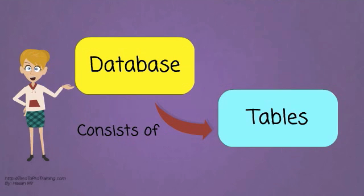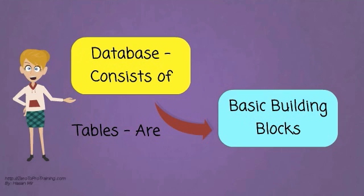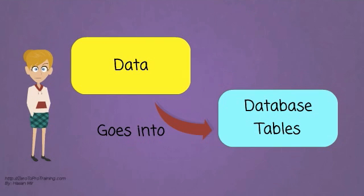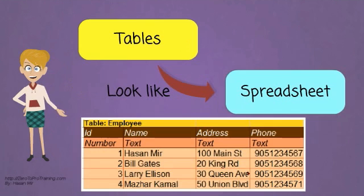A database is constructed of multiple tables. A table is the most fundamental building block of a database. A database without a table would be of little or no use. There would be no data in the database without a table. Not only that, data would have nowhere to go if there is no table in the database. The data goes into database tables. Visually tables look like a spreadsheet.